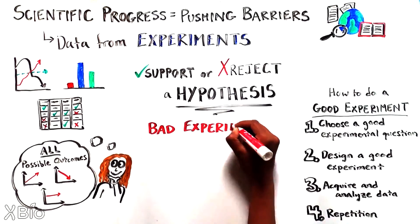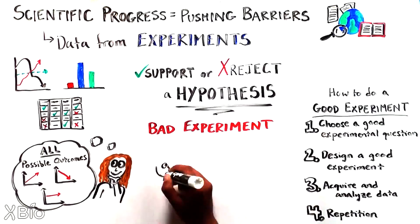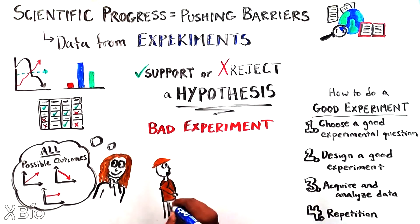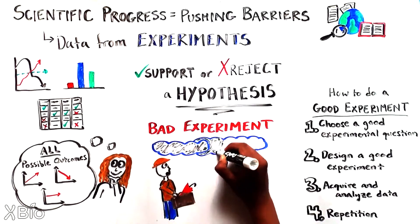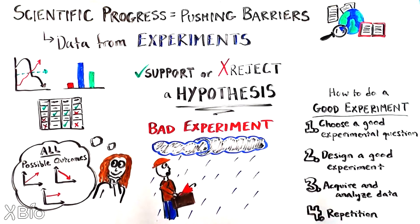If we design bad experiments, we mistakenly might end up thinking that just because we are observing two things together, like one, you carry an umbrella in your bag, and two, it starts raining on your walk, that one of those things is causing the other. You are causing it to rain on your walk by carrying an umbrella in your bag.